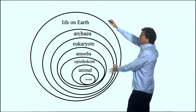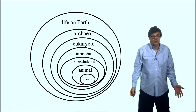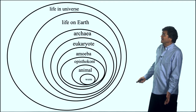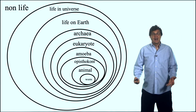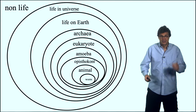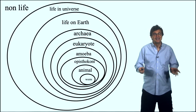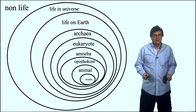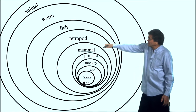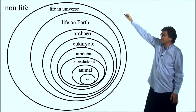Archaea is part of life on Earth. And there may be a larger group called life in the universe. And then there's an even larger group called non-life. To review this phylogenetic-based identity onion — biological passport — here you are, all the way from worms and animals to non-life.